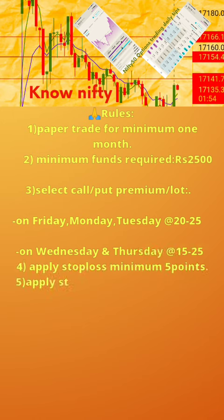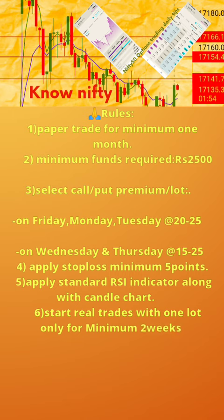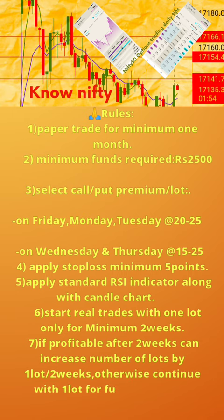4. Apply stop loss minimum 5 points. 5. Apply standard RSI indicator along with candle chart. 6. Start real trades with 1 lot only for minimum 2 weeks. 7. If profitable after 2 weeks, can increase number of lots by 1 lot for 2 weeks; otherwise continue with 1 lot for further 2 weeks.